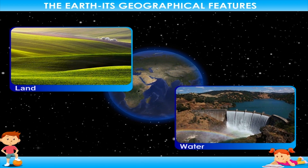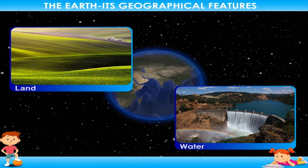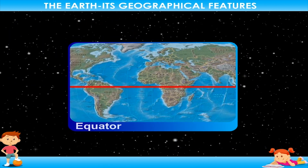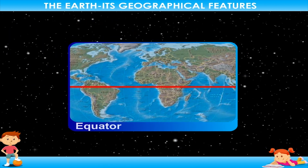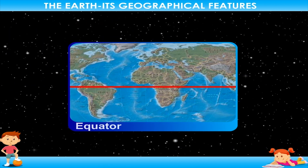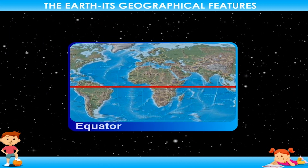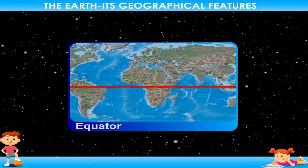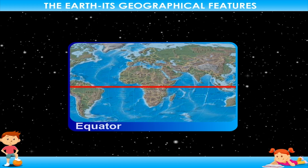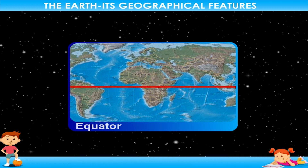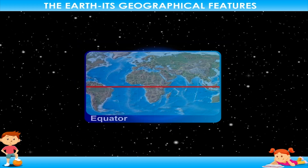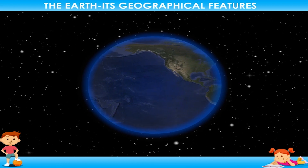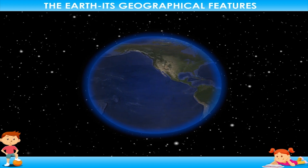The surface of the Earth is slightly bulging at the equator and flat at the poles. It is easy to locate any surface on Earth as it appears flat, but the Earth is round like a ball.